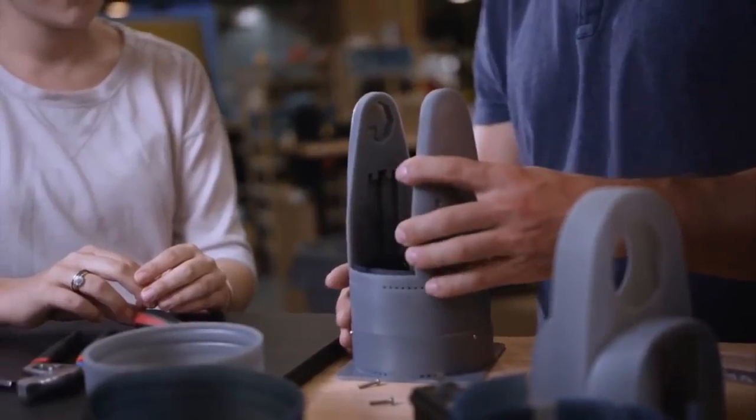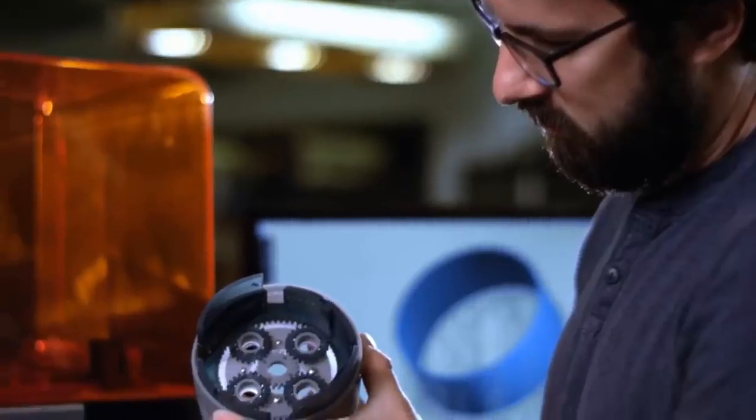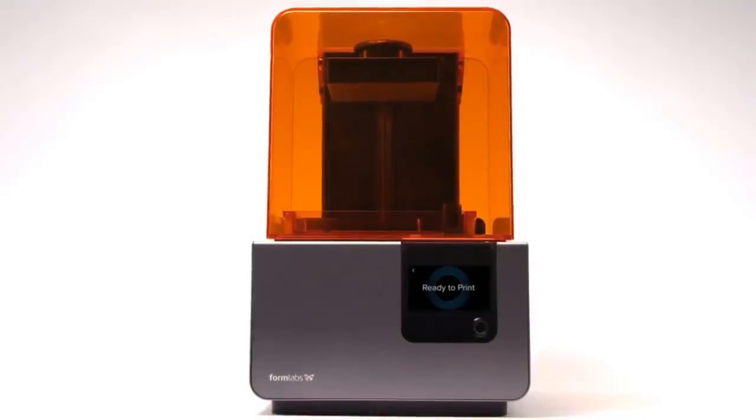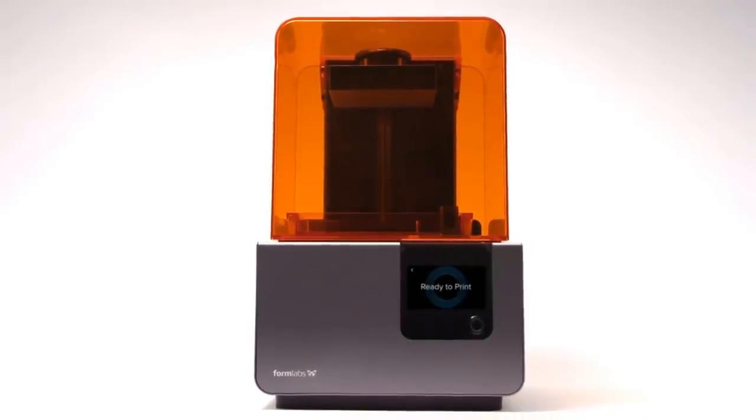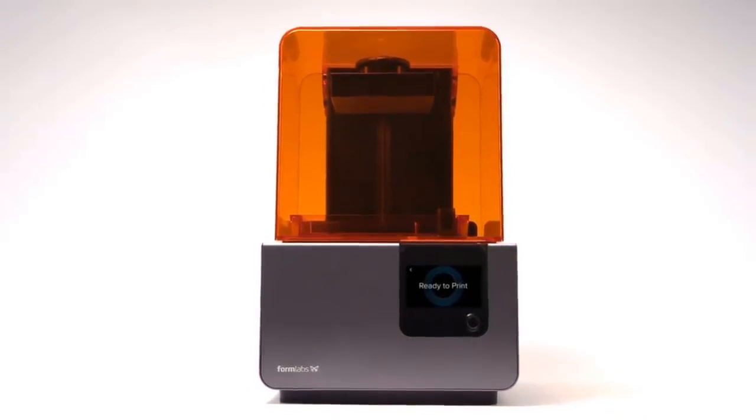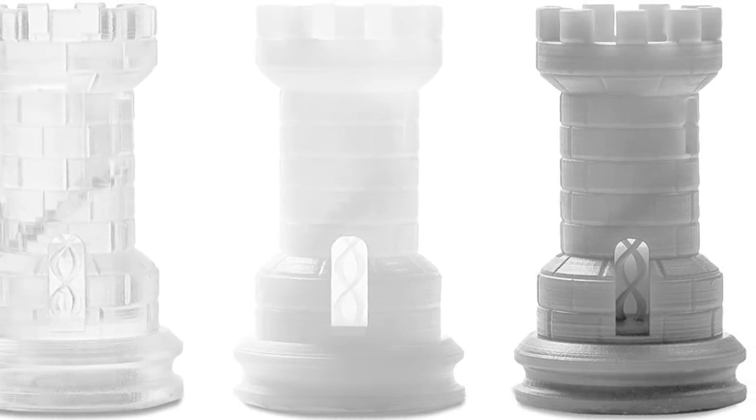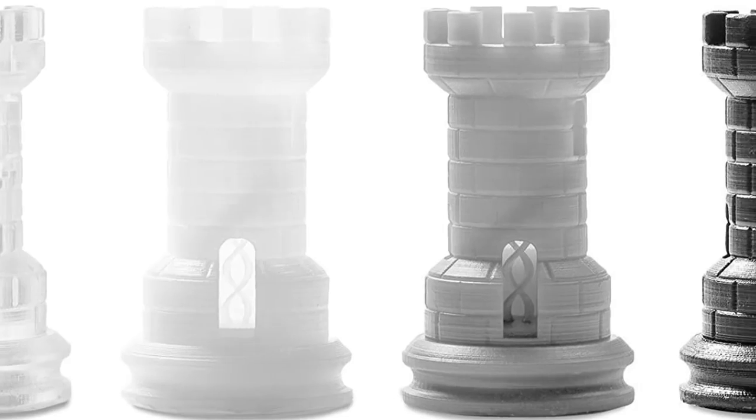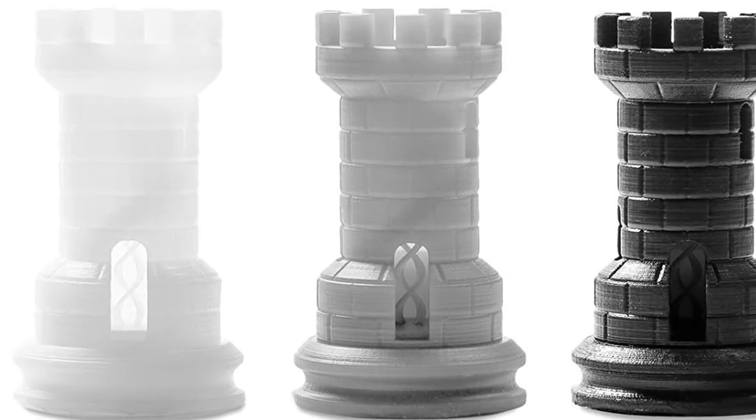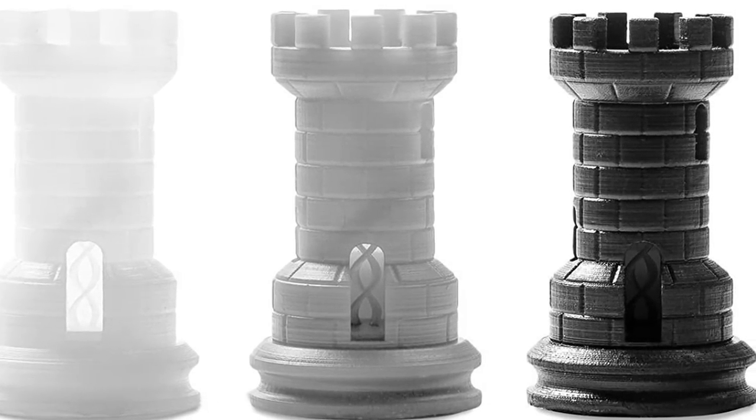The Form 2 is hands down one of the most detailed and dimensionally accurate printers we've ever used. The resolution is so good you can barely see layers. Fine details come through in ways that FDM printers can only dream of. Bridges and unsupported spans—bring it on. Tiny objects with extremely precise dimensions—absolutely no problem.